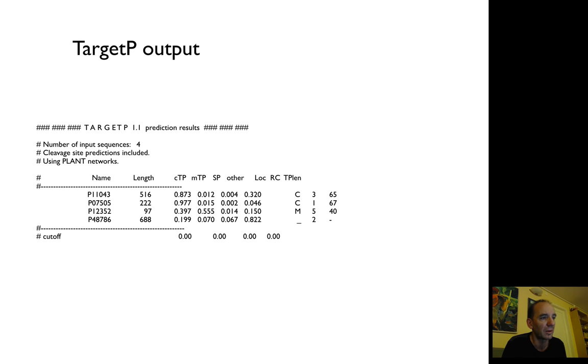The next one is even higher reliability at 0.977. The third sequence P12352 is shorter and it's actually very difficult to say if it's a chloroplast transit peptide or mitochondrial targeting peptide because the scores are very similar, 0.40 compared to 0.65. So this was a mitochondria, but the reliability confidence is lower.